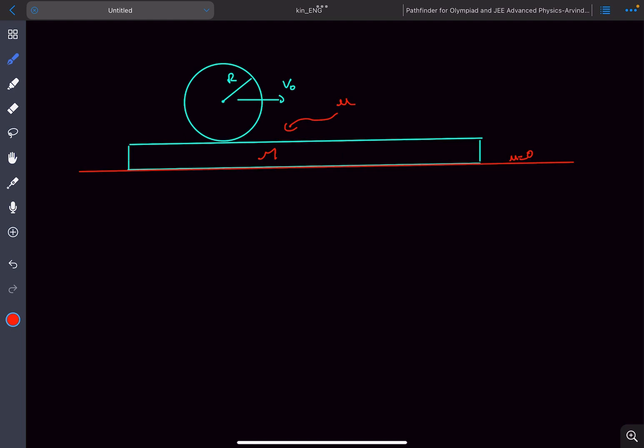If we draw an FBD of the sphere, there will be kinetic friction acting on it. The friction is kinetic because there is relative motion between these two points initially. We can directly write the magnitude as mu mg.